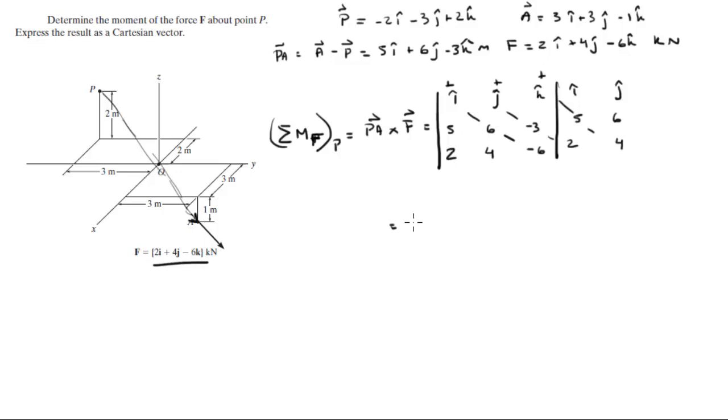i times 6 times negative 6 is minus 36i. j times negative 3 times 2 is minus 6j. k times 5 times 4 is plus 20k.